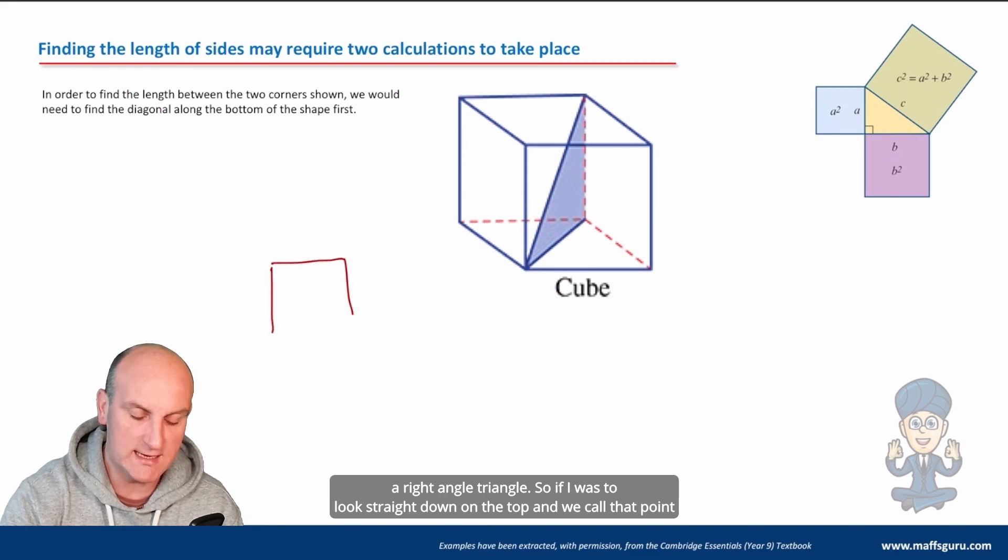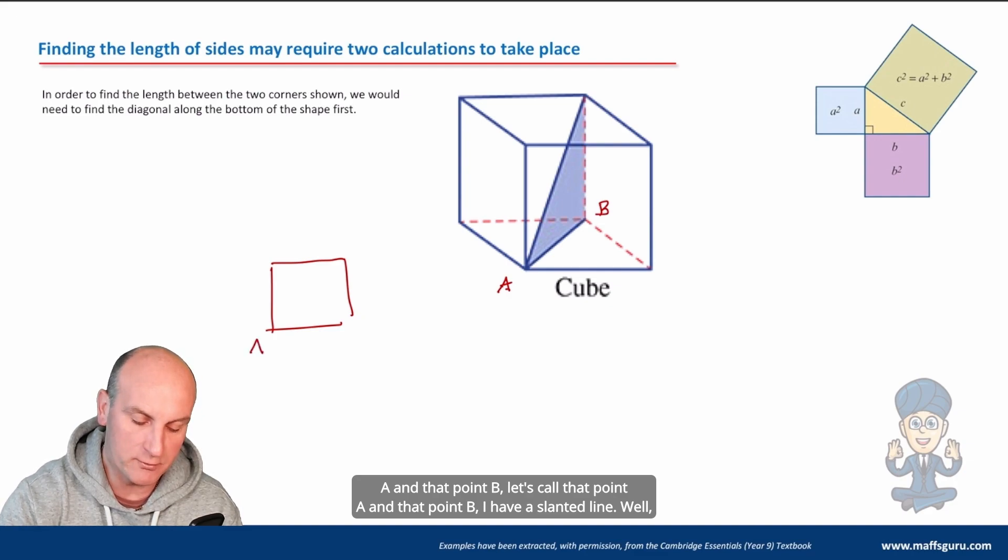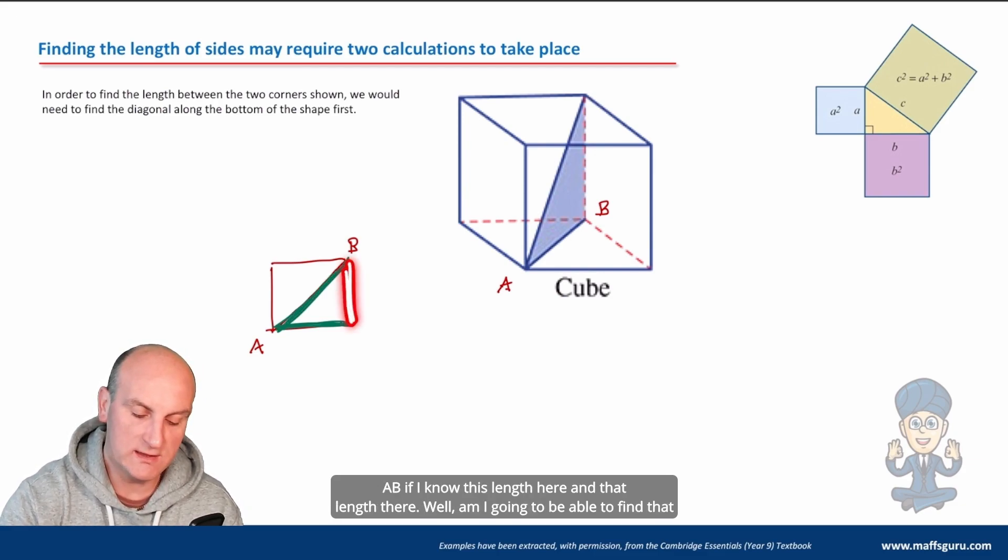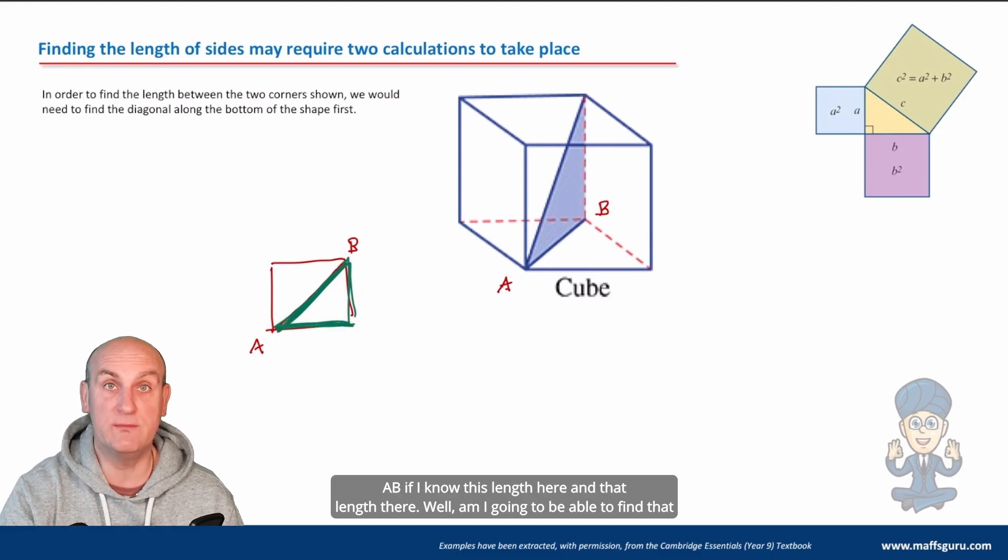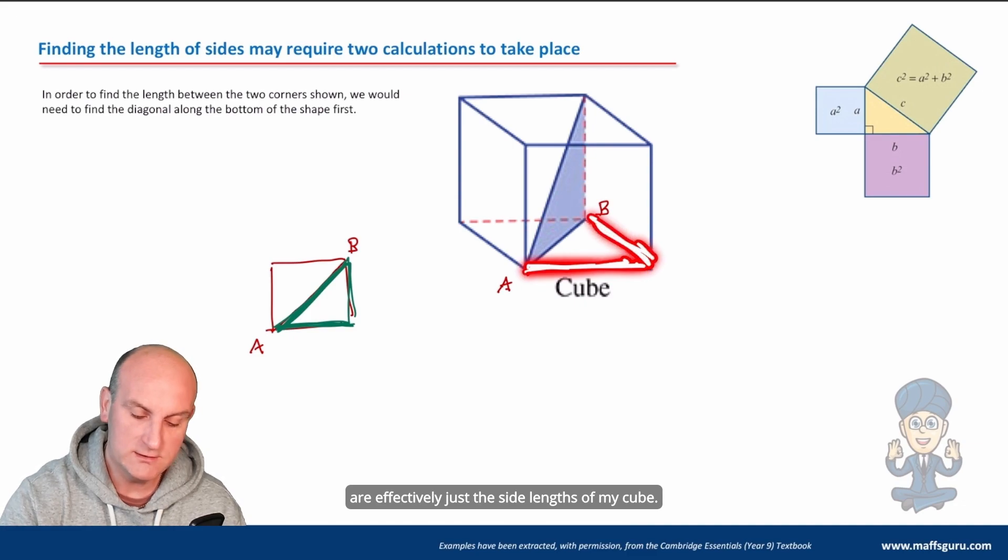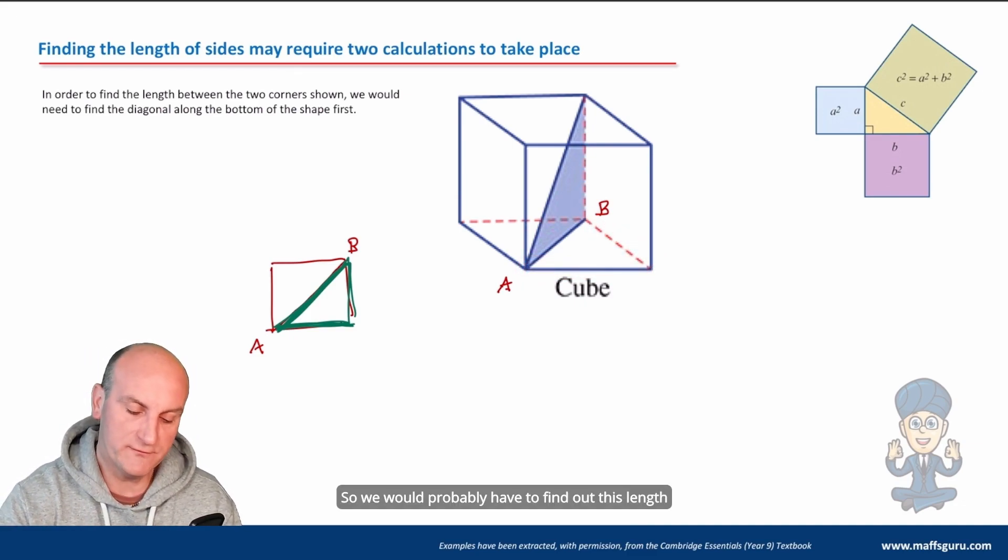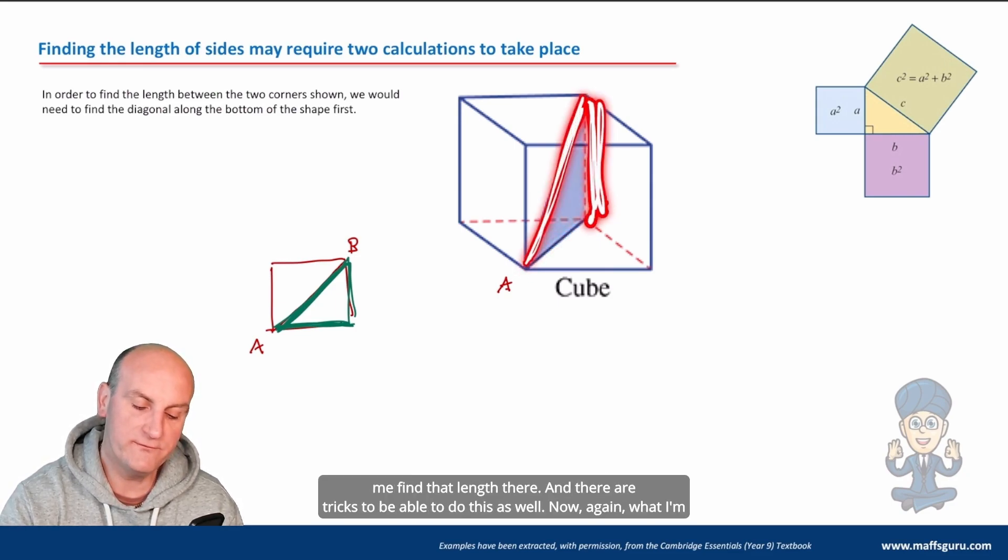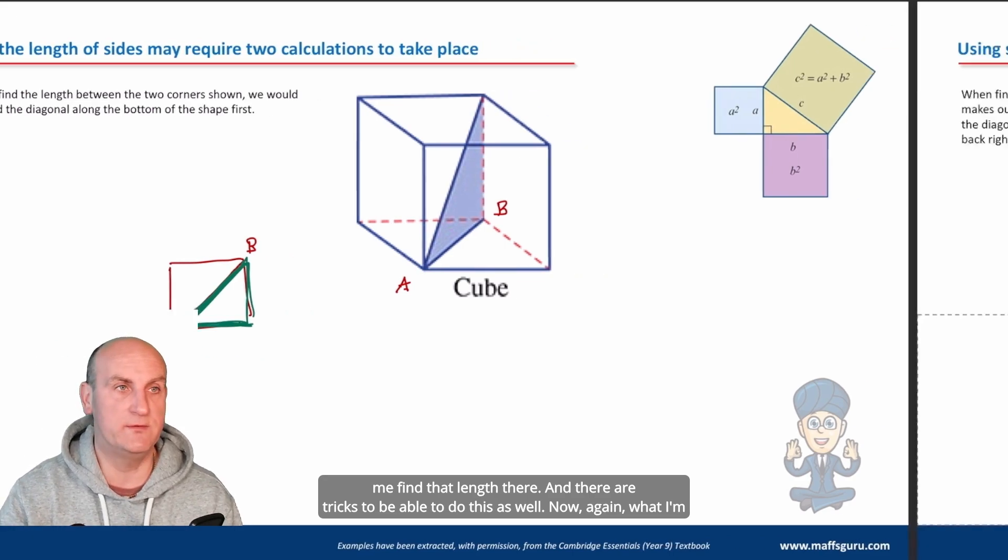Ah well a slanted line can be turned into a right angle triangle. So if I was to look straight down on the top and we call that point A and that point B, I have a slanted line. Well if I've got a slanted line I can turn that into a right angle triangle. I can find my length AB if I know this length here and that length there. Am I going to be able to find that length there? Yes of course because again these are effectively just the side lengths of my cube. So we would probably have to find out this length here then we would know that length there to help me find that length there and there are tricks to be able to do this as well.